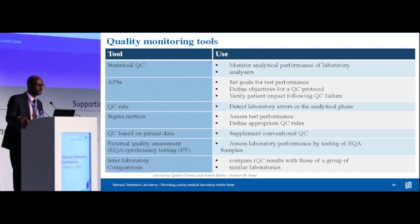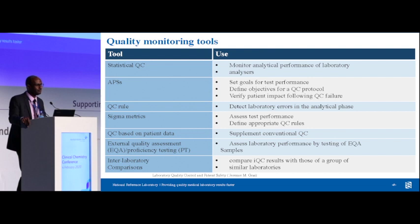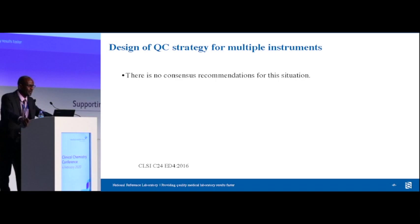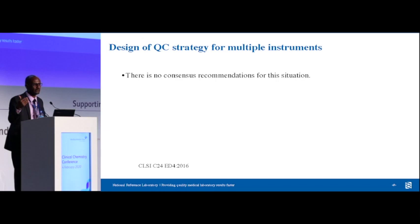The last reference slide covers terminology people keep mixing up — for example, the use of patient data as a supplement to conventional QC, QC rules, and APS (Analytical Performance Specification). My advice is to read and get familiar with this terminology. Another interesting piece from CLSI C24: many labs have two different analyzers for the same test — two chemistry analyzers, two hematology analyzers. Should you pool all data together for mean and SD, or treat them separately? CLSI did not reach consensus, so they left it to the lab director to decide.